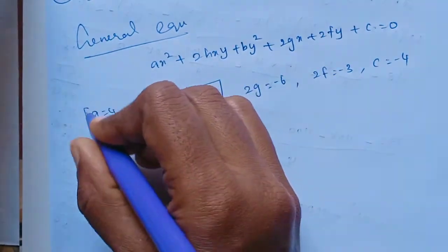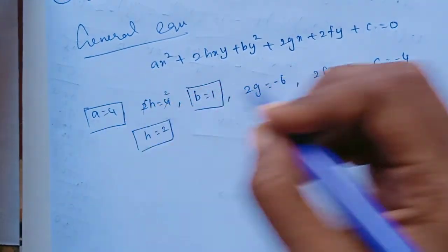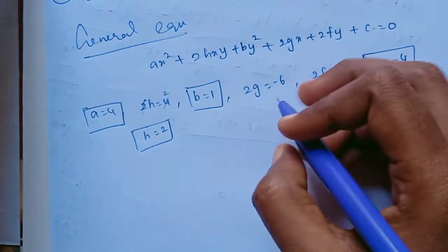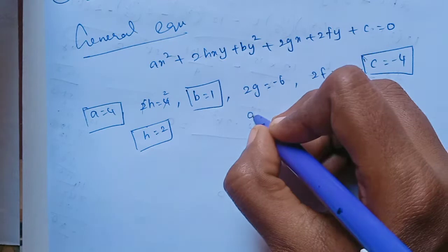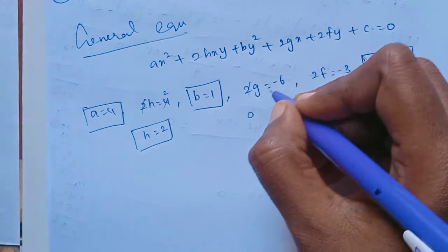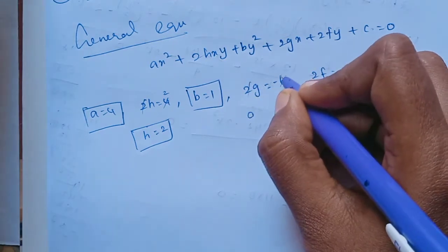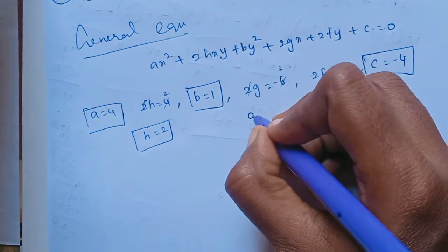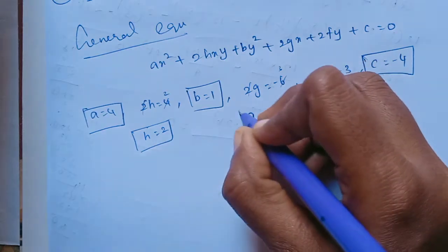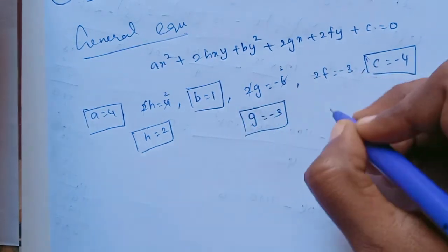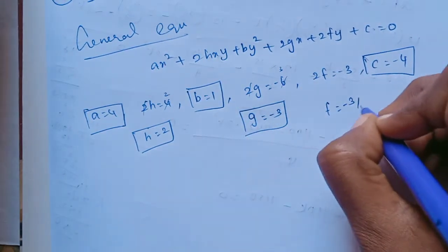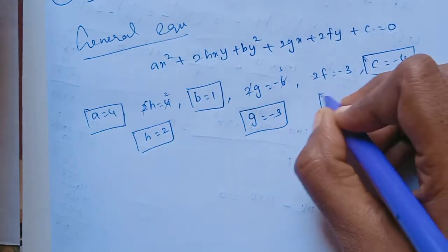So our extracted values are: A = 4, B = 1, C = -4, H = 2, G = -3, F = -3/2. Now we will use these values to prove the lines are parallel and then find the distance between them.